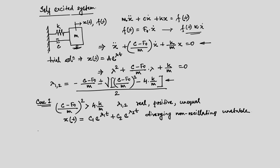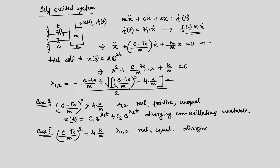Case 2 is when (c minus f₀ over m)² equals 4 k over m. In that case, the square root term is zero, and λ₁ and λ₂ are real but equal. This also results in a diverging, non-oscillating, unstable case.